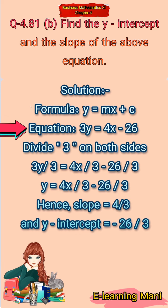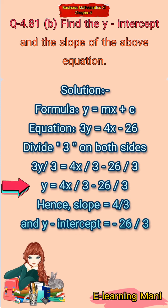Equation जो हमने find की थी: 3y is equal to 4x minus 26। Divide 3 on both sides करेंगे क्योंकि y के साथ 3 है। 3y upon 3 is equal to 4x upon 3 minus 26 upon 3। 3 से 3 cut हो जाएंगे। So y is equal to 4/3 x minus 26/3। Hence, slope is equal to 4/3 and y-intercept is equal to minus 26/3। Thanks for watching — kindly subscribe and like my channel.